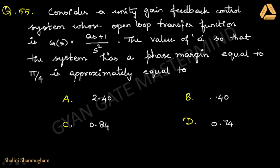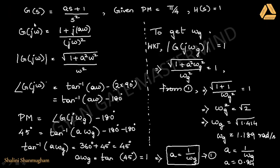Taking the open loop transfer function, I am substituting s = jω and then finding the magnitude as well as the phase angle. These are the magnitude and phase angle I am getting for the given open loop transfer function.